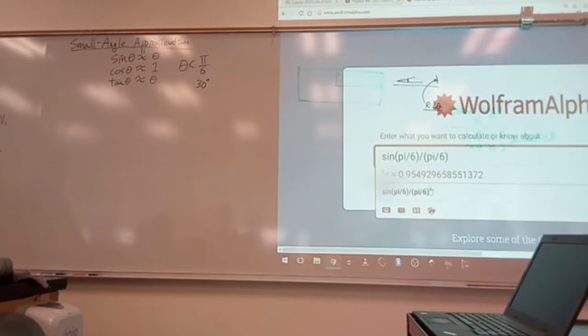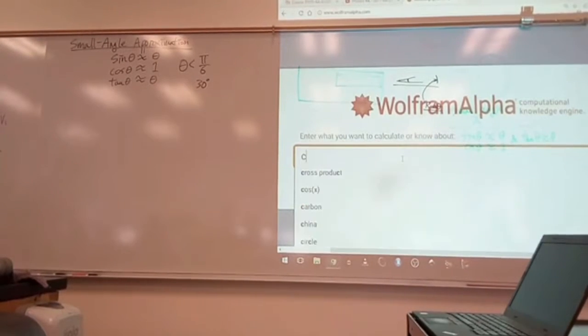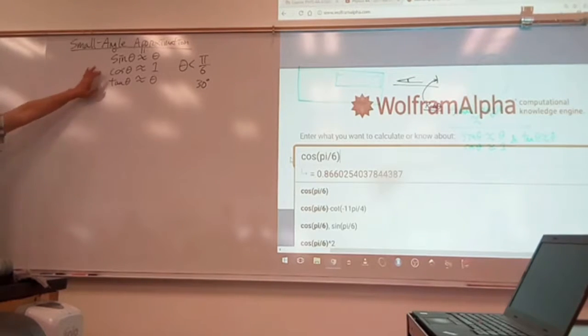So if I do, let me scroll this here. If I do cosine, so let me do cosine of pi over 6. Okay, I guess that's not as good as I thought it was. So I guess this approximation, maybe you don't want to hang your head on it too much.